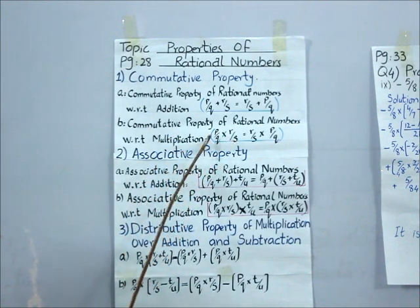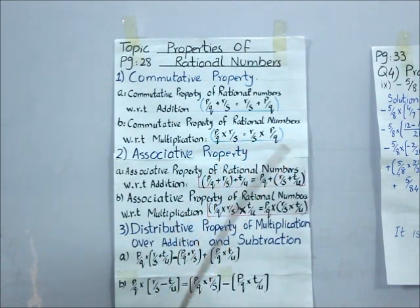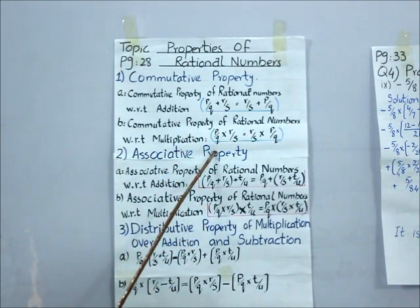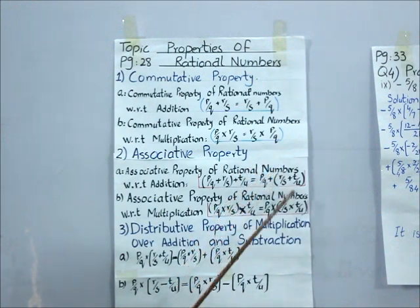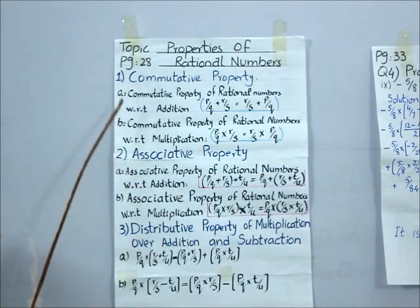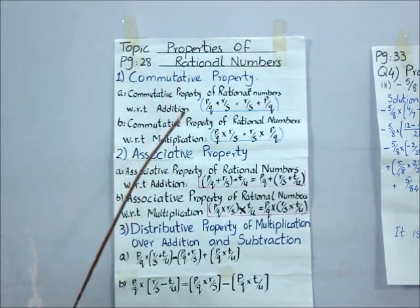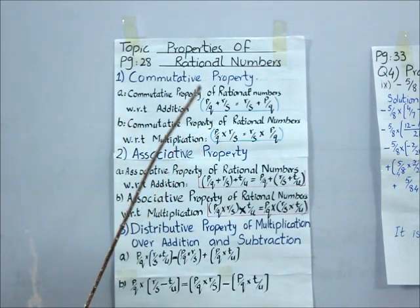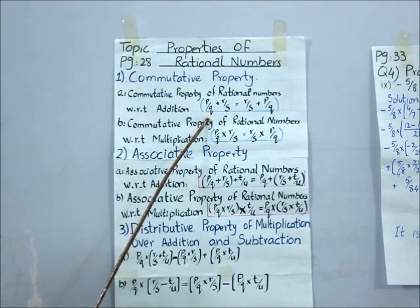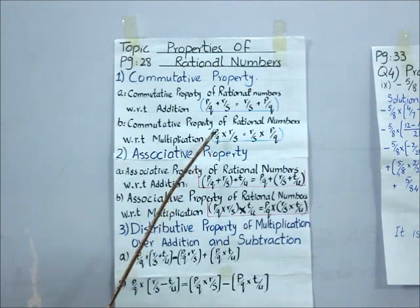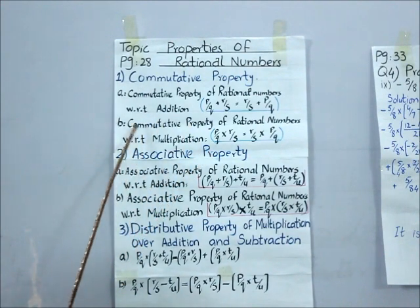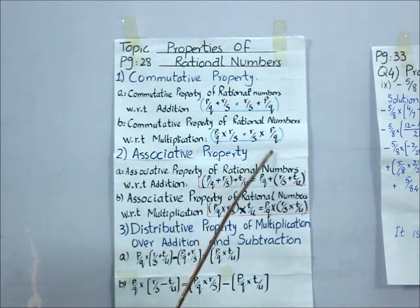The second kind is the commutative property of rational numbers with respect to multiplication — commutative property holds for multiplication as well. Whenever we have two rational numbers and change their order, the answer cannot be affected. For example, 3 multiplied by 2 is 6, and 2 multiplied by 3 is always 6. Through these two types, we understand that when adding or multiplying, we apply the same rules learned for operations of rational numbers, and changing the order of terms does not affect the answer.